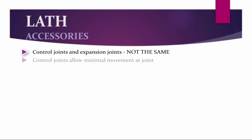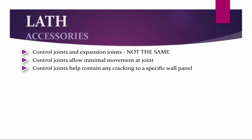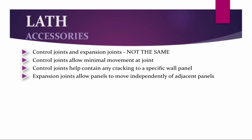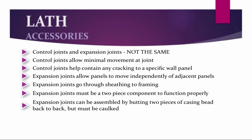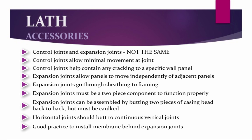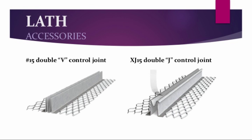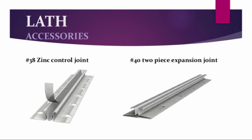Other lath accessories are control joints and expansion joints — however, these are not the same. Control joints allow minimal movement at the joint and help contain any cracking to a specific wall panel. Expansion joints allow panels to move independently of adjacent panels and go through the sheathing all the way to the framing. Expansion joints must be a two-piece component to function properly and can be assembled by butting two pieces of casing bead back-to-back, but this must be caulked. Horizontal joints should butt to continuous vertical joints. Good practice is to install membranes behind any expansion joints. Examples include the number 15 double V control joint, the XJ double J control joint, number 38 zinc control joint, and number 40 two-piece expansion joint, which allows movement up, down, side to side, and in and out.